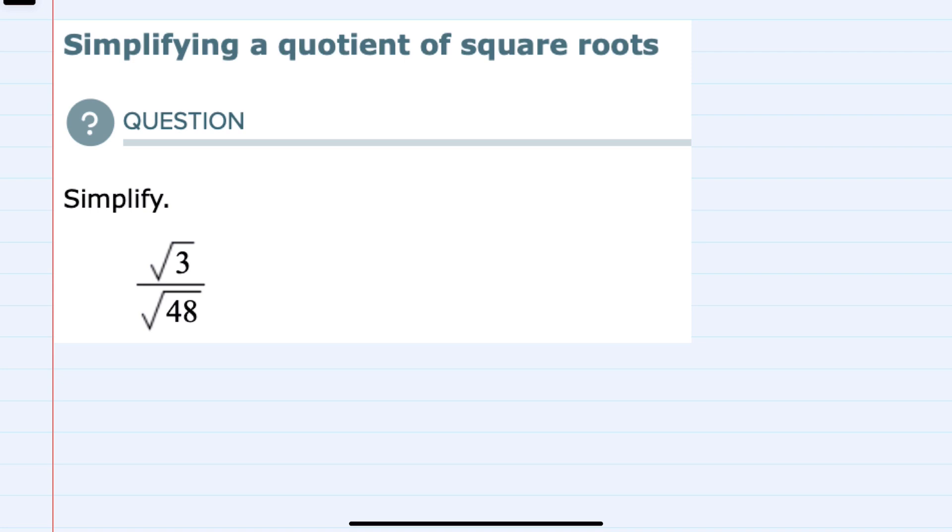Since both the numerator and the denominator are underneath the radical, I can rewrite this as one radical with the 3 in the numerator and the 48 in the denominator. And since I now have a fraction under the radical,